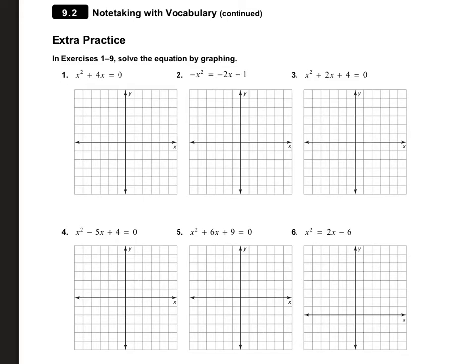On this first set of problems, they want us to solve the equation by graphing. So on number one, I'm going to think about this as an equation to graph: y equals x squared plus 4x. You know several ways to graph by now. What I always like to do first is see if I can factor the problem, and if I can, that will help me find my zeros, then my axis of symmetry, and then my vertex. In this case I can factor it — I can take out an x, which leaves us x plus 4.